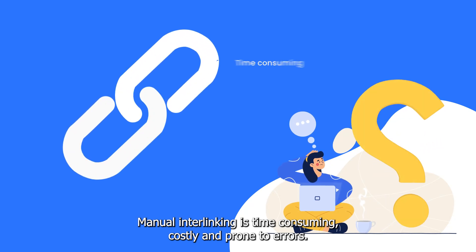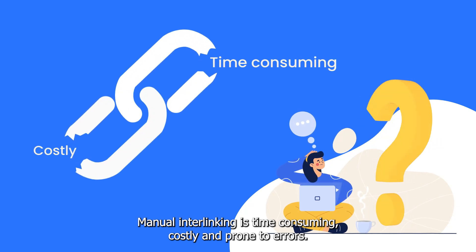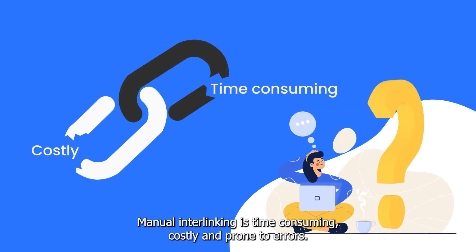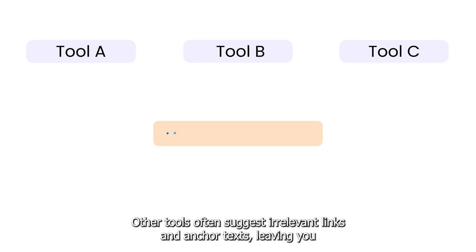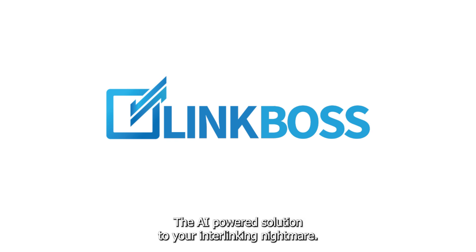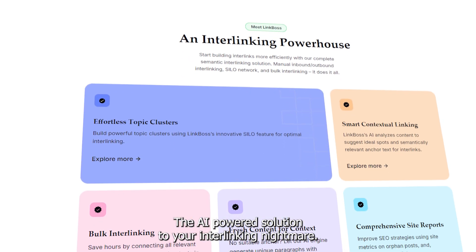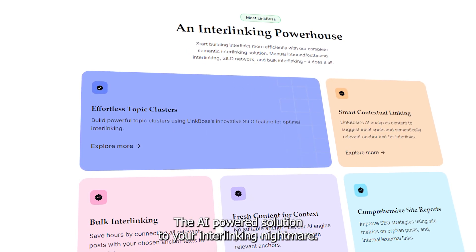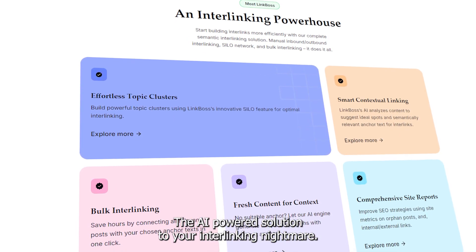Manual interlinking is time-consuming, costly, and prone to errors. Other tools often suggest irrelevant links and anchor texts, leaving you with more frustration. Meet LinkBoss, the AI-powered solution to your interlinking nightmare.